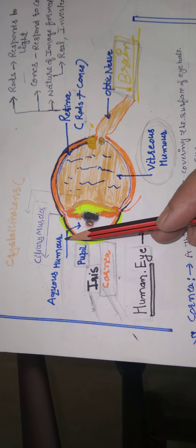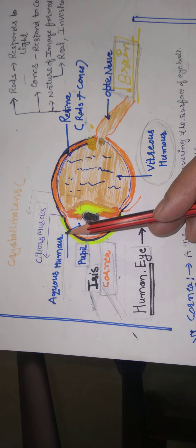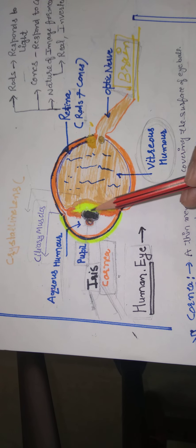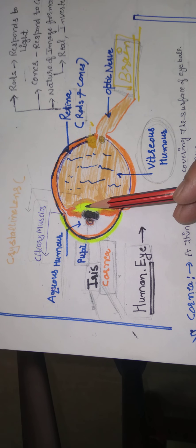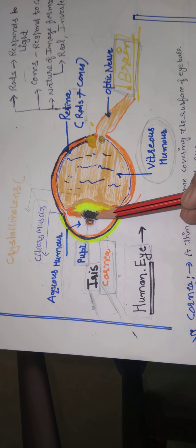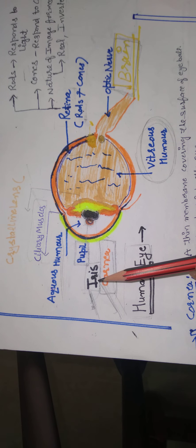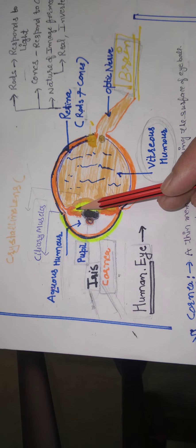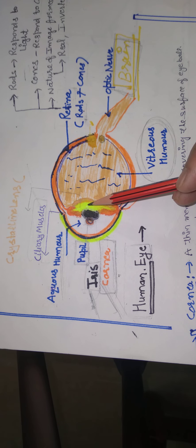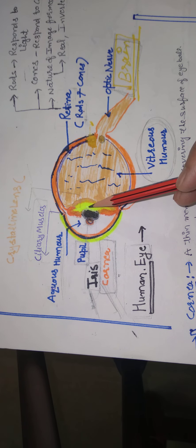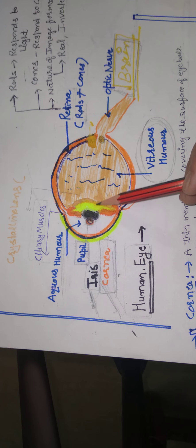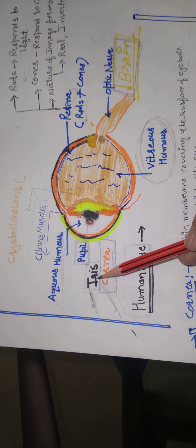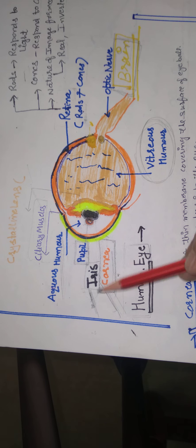So if ciliary muscles ने अगर eye lens की focal length को increase करना है तो वो relaxed position में रहते हैं. Then if we want to focus on an object which is close to our eye, size of the eye lens becomes thick means focal length उसकी decrease हो जाती है. जिससे की हम nearby object पर easily focus कर पाते हैं.